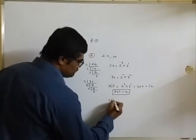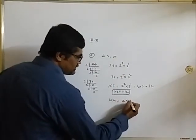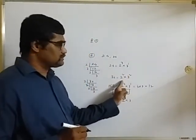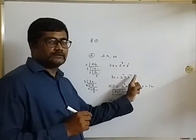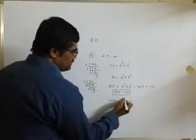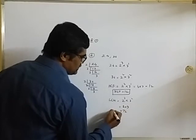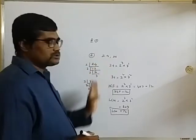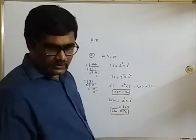For LCM, simply the opposite: take all the possible prime factors and use the highest powers. For 2, the highest power is 3; for 3, the highest is 2. So LCM = 2 cubed into 3 squared = 8 into 9 = 72. You can see we verified: HCF is 12 and LCM is 72, matching the definition examples. Hope it is clear. If not, please review the video.